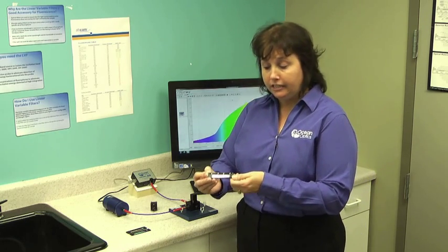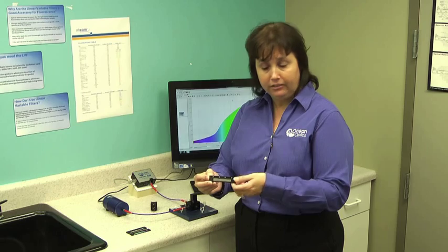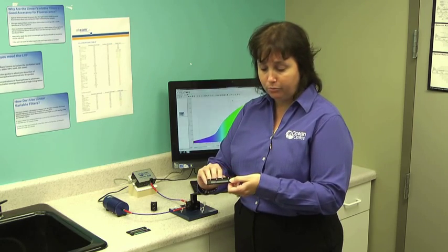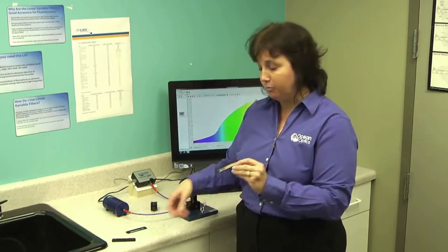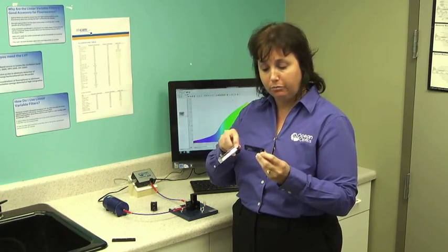I'm holding the linear variable band pass filter in my hand, but we can take these apart by removing these screws, and we find that we then have a linear variable high pass and a linear variable low pass filter.